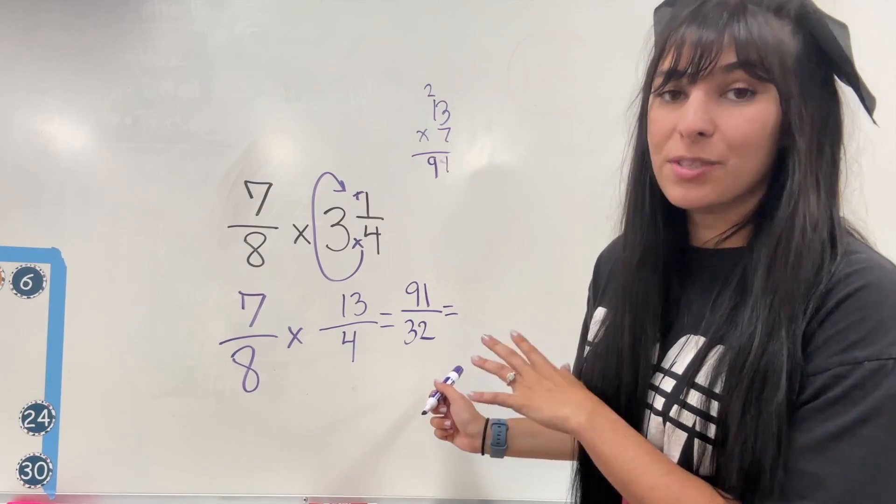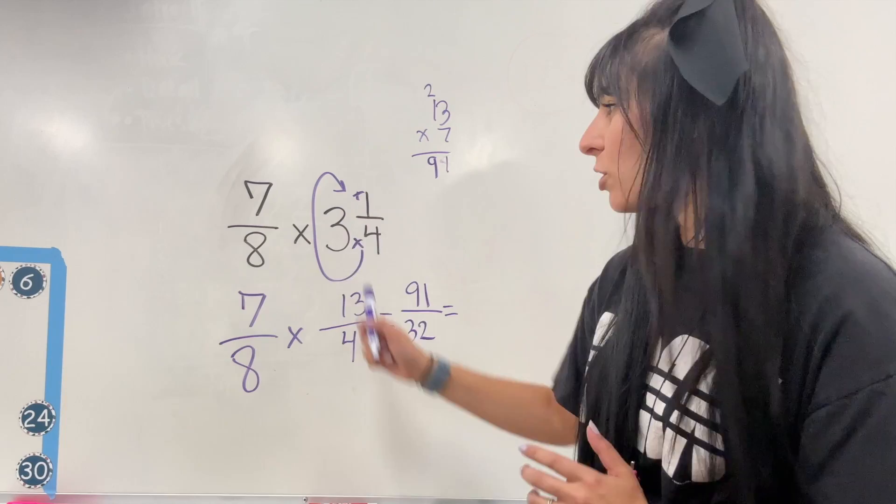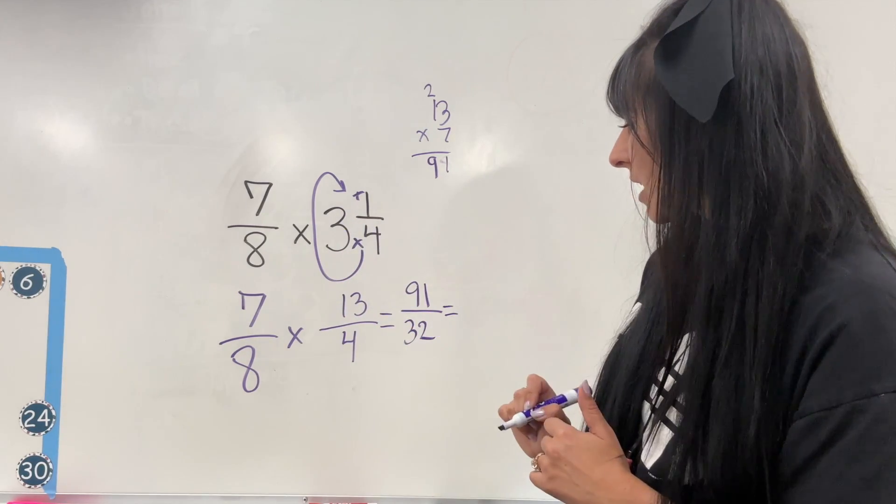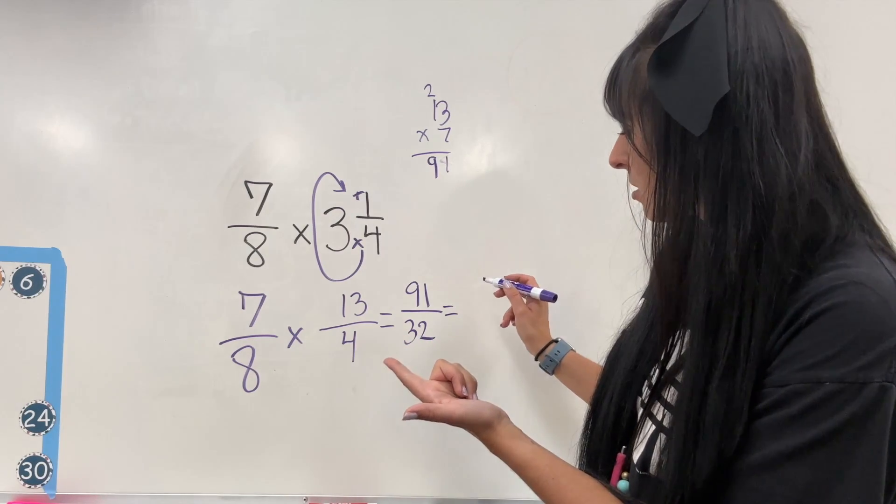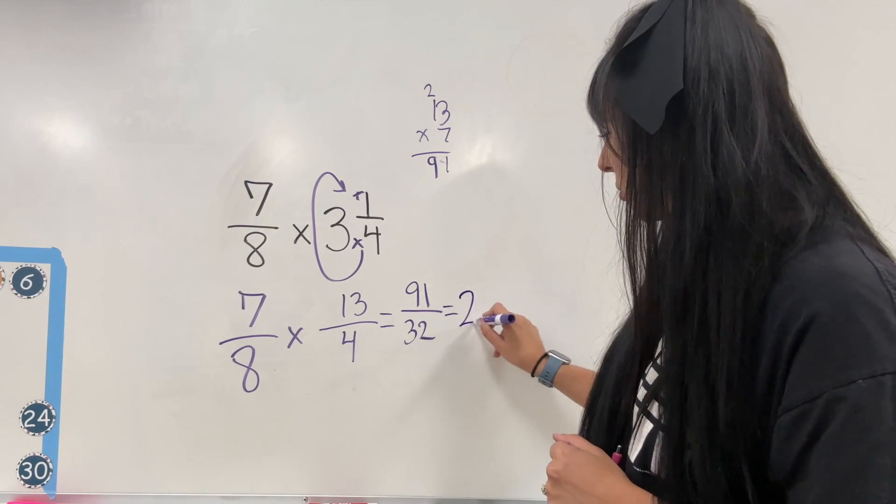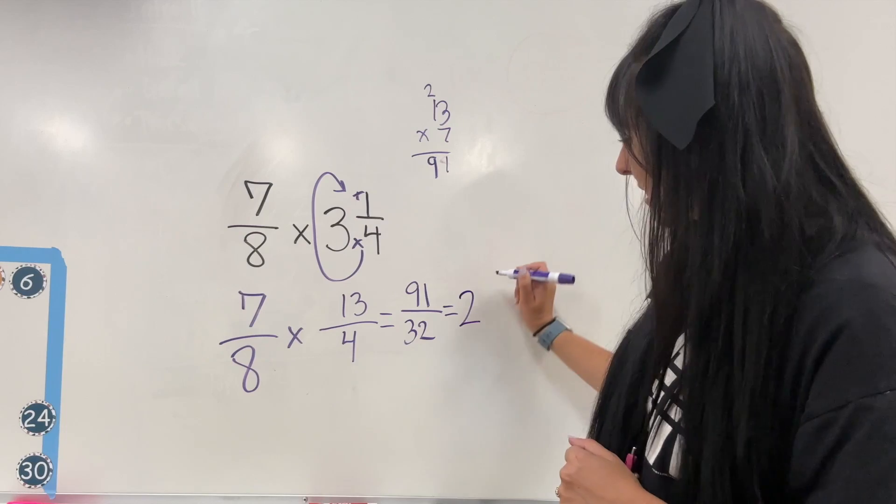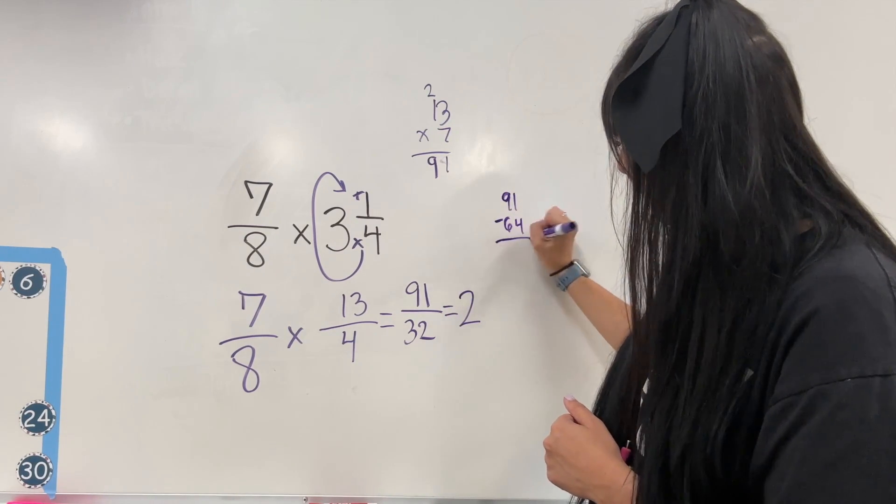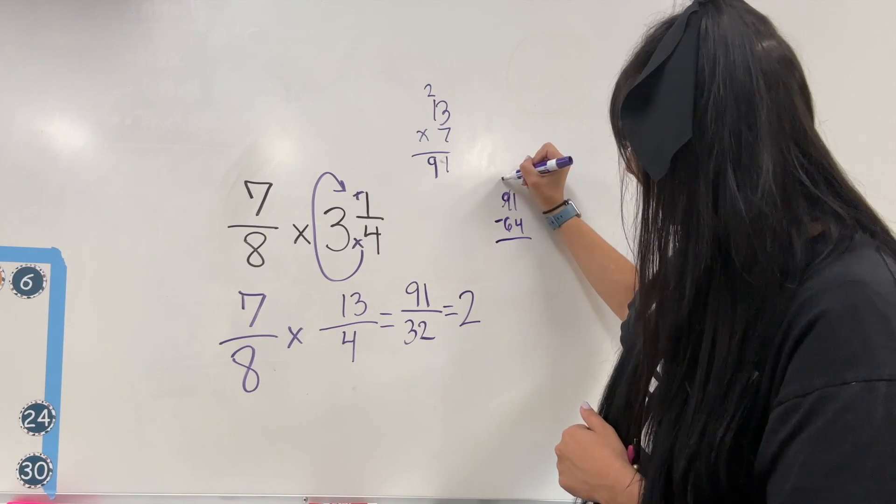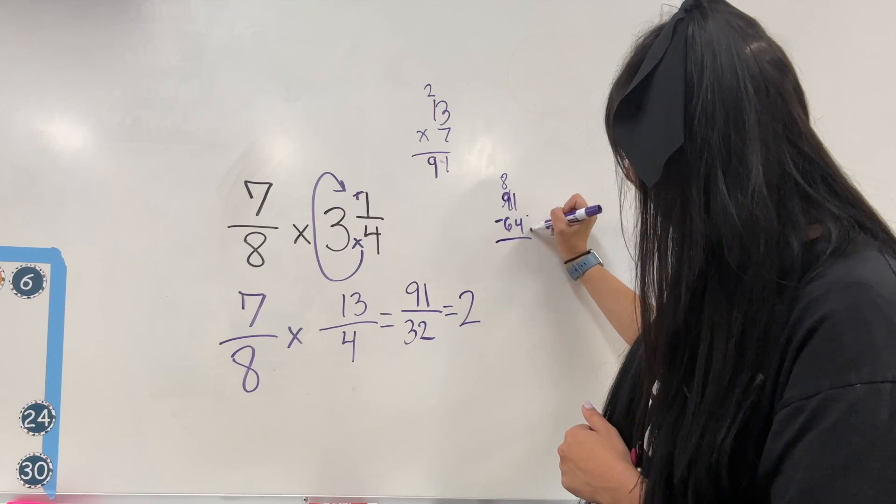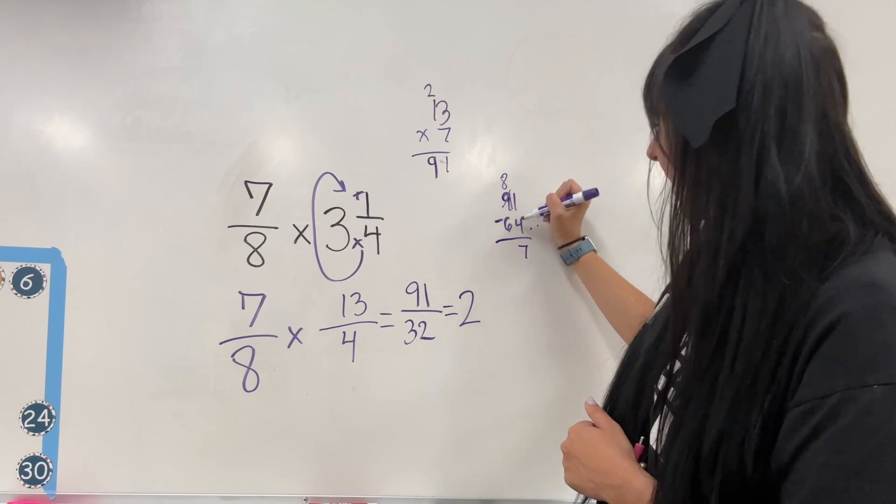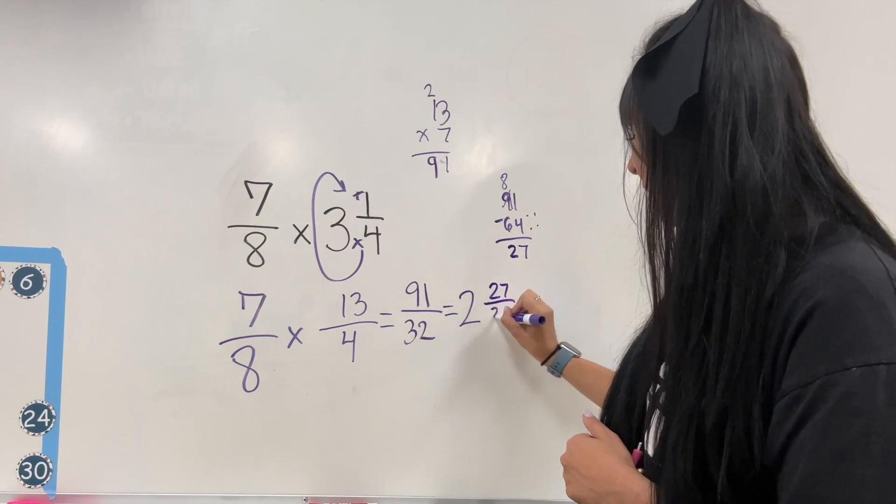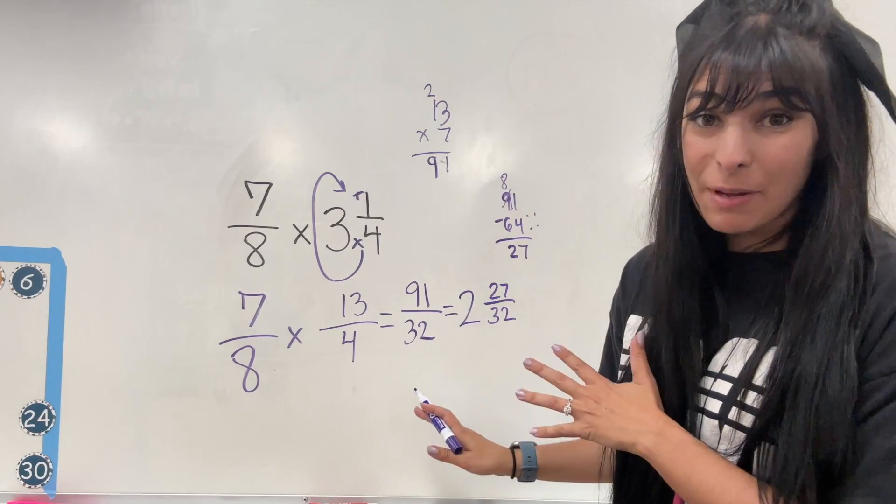So now for this one, I am going to simplify turning it back into a mixed number. We just can't multiply with the mixed number. So 32 goes into 91, not quite three times. So let's do two, and that's going to give me 64. Subtract to find the remainder, and that gives me 27. So I'm going to have two and 27 over 32, and that is my final answer.